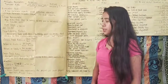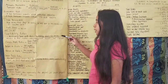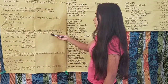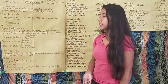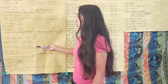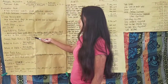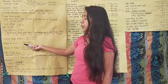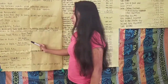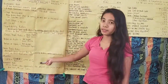Profitability ratios measure how well an entity generates income relative to revenue, operating costs, assets, and capital. The formulas are: gross profit ratio equals gross profit over net sales; return on assets equals net income over total assets; and return on equity equals net income over shareholders' equity.